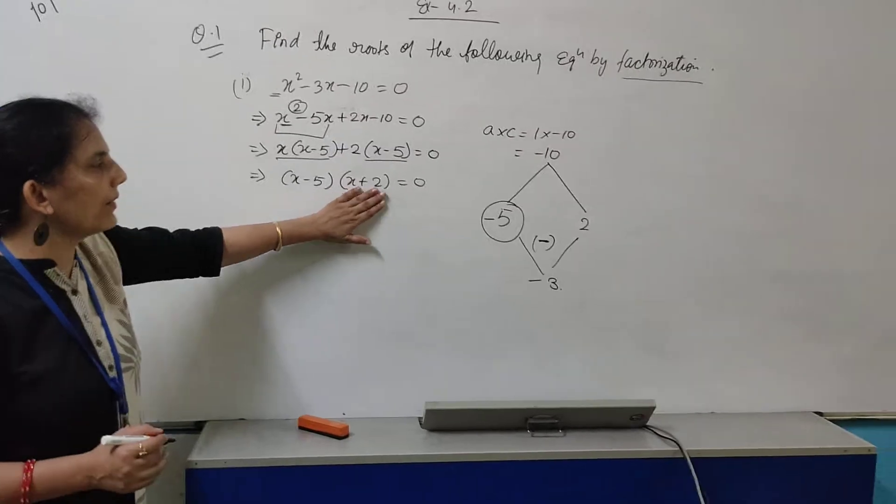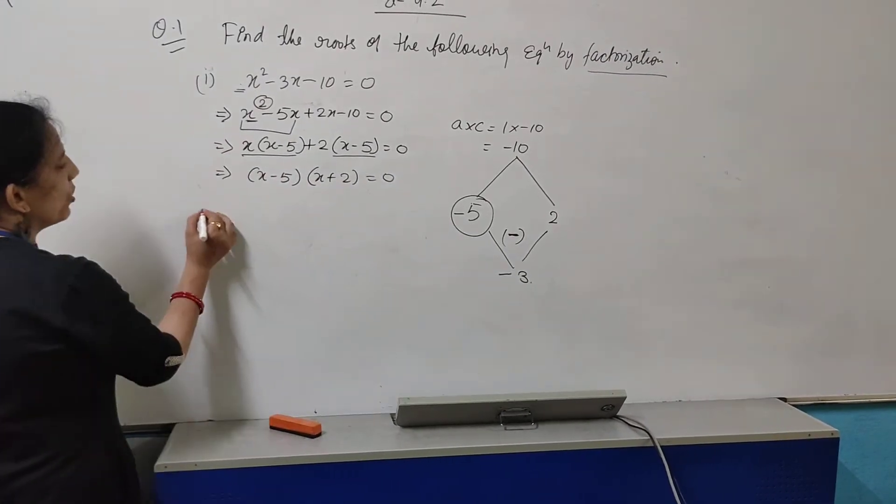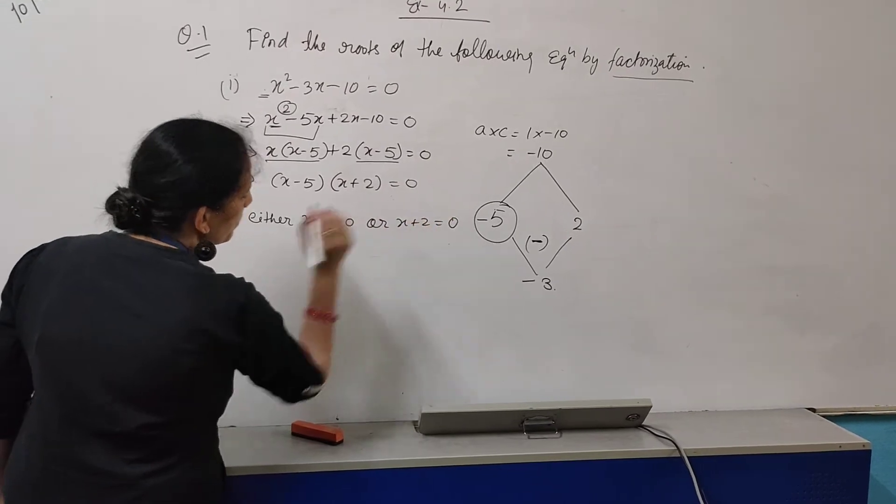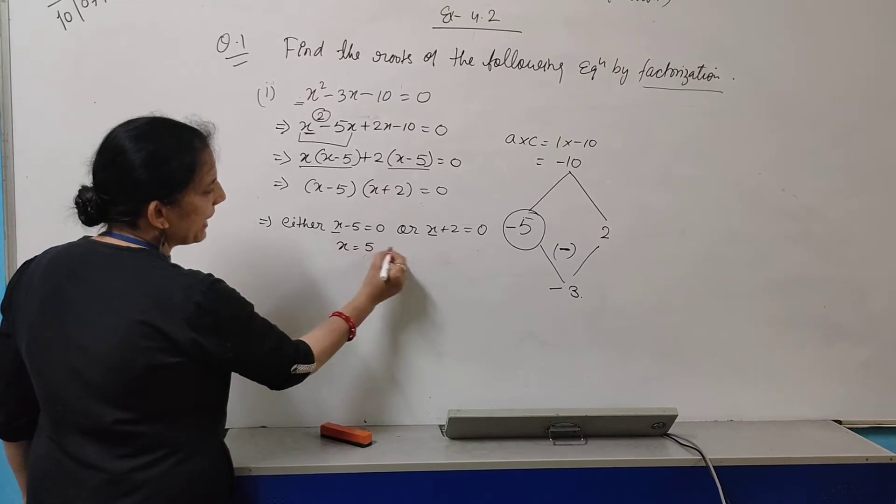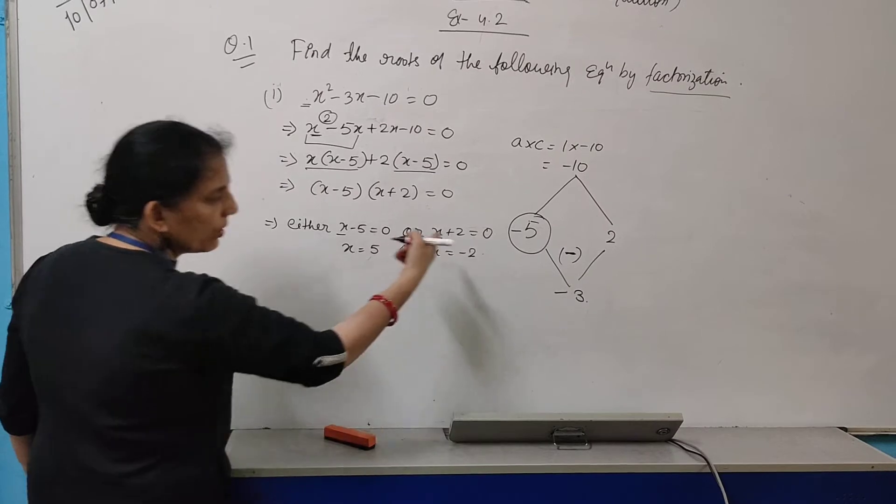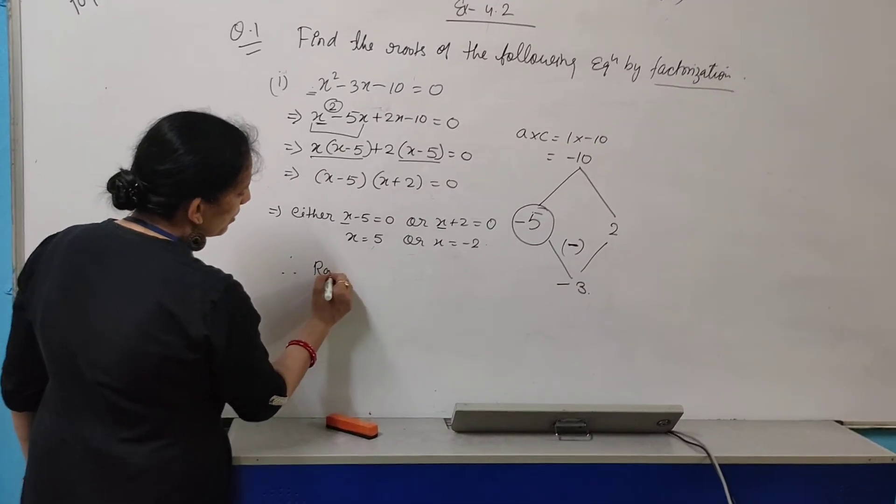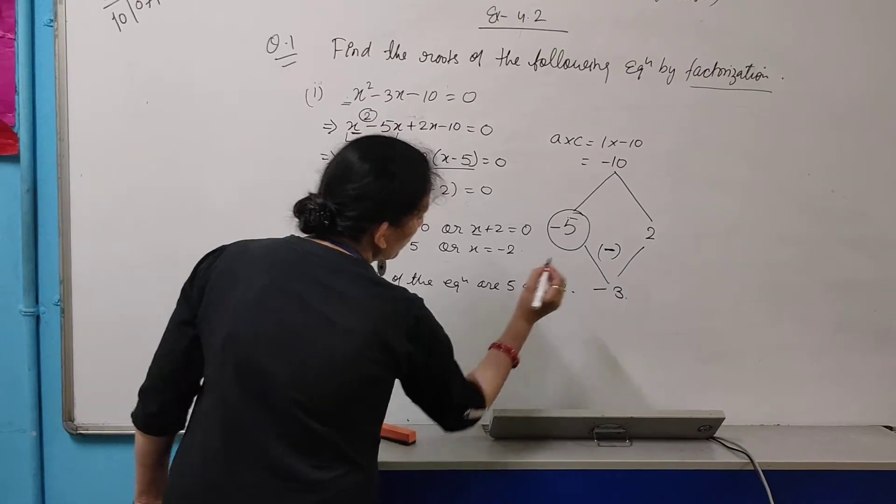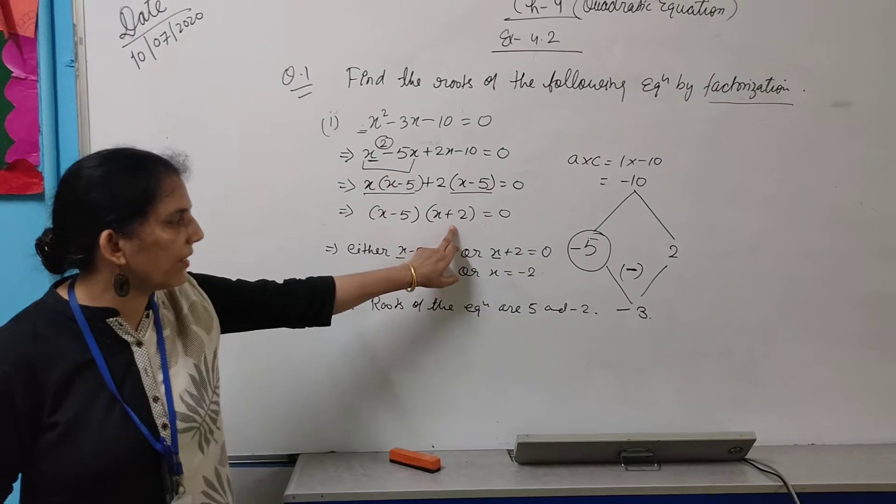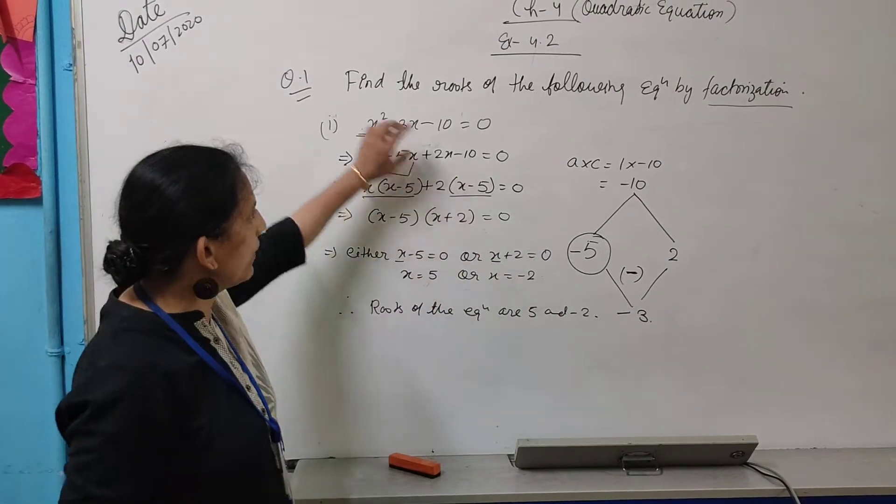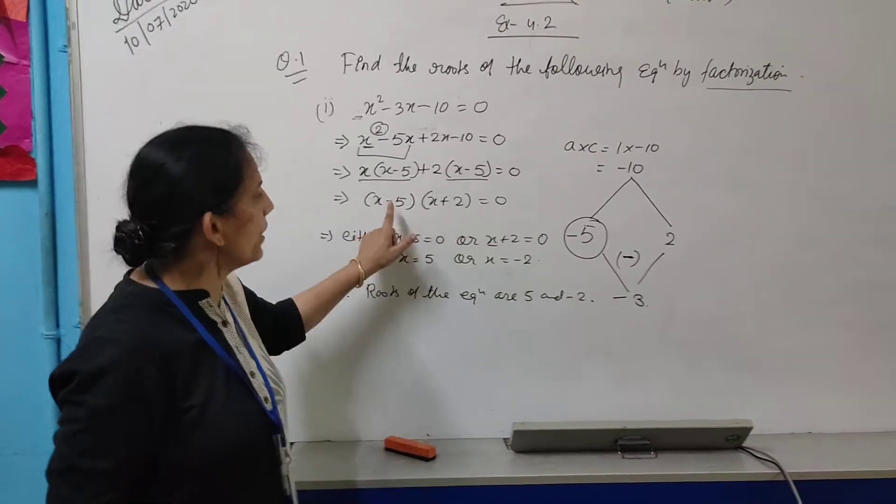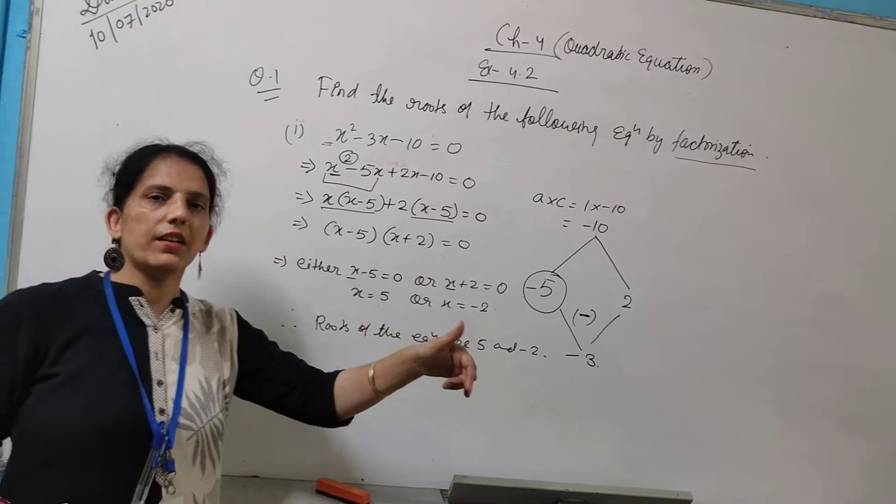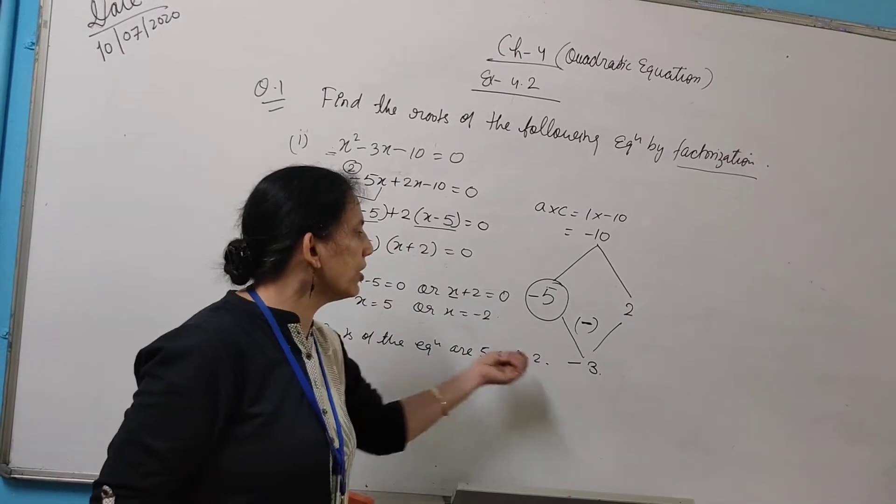So now what do we do with these two factors? We equate them to zero. This implies either x minus 5 is equal to 0 or x plus 2 is equal to 0. So what is the value of x? Here, 5, or here minus 2. Therefore, roots of the equation are 5 and minus 2. These are the roots. Roots means these are the solutions of the equation. It means when we put 5 or minus 2 in place of x, the whole equation becomes 0. So these are the roots of the given equation.